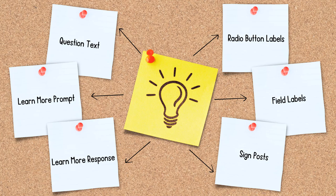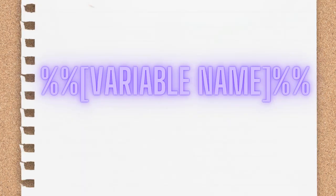You can use a variable macro in several different spots in an A to J guided interview: in the question text, a learn more prompt, a learn more response, in radio button or field labels, and in the sign posts along the path the user is traveling to the courthouse. Anywhere you use it, you use this formula: double percent signs, open bracket, variable name, close bracket, double percent signs. This tells A to J Author to call the value of that variable and display the value in the text, not the variable name.